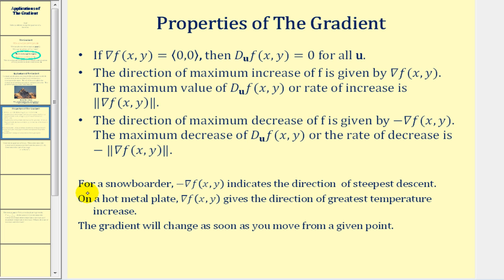For a snowboarder, the opposite of the gradient of f of x, y would indicate the direction of steepest descent or steepest decline. And on a hot metal plate, the gradient of f of x, y gives us the direction of greatest temperature increase. We do need to be aware that the gradient will change as soon as we move from a given point.